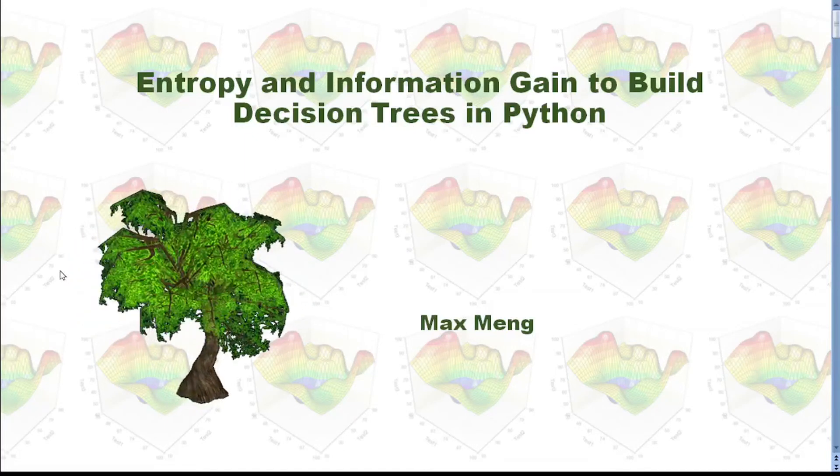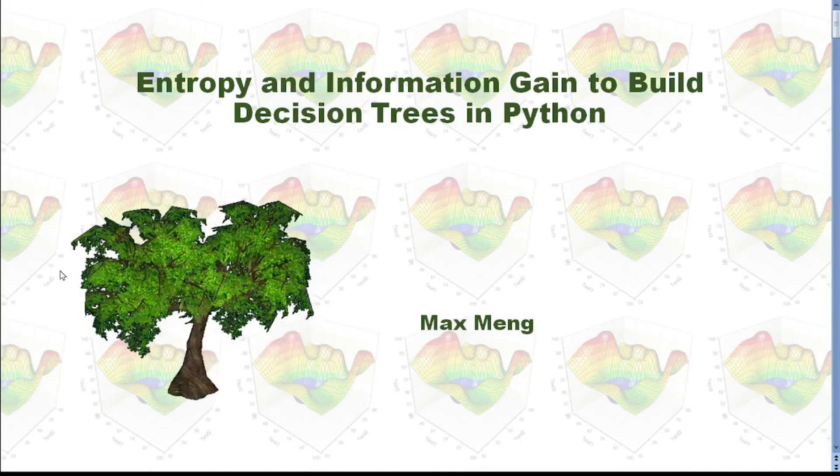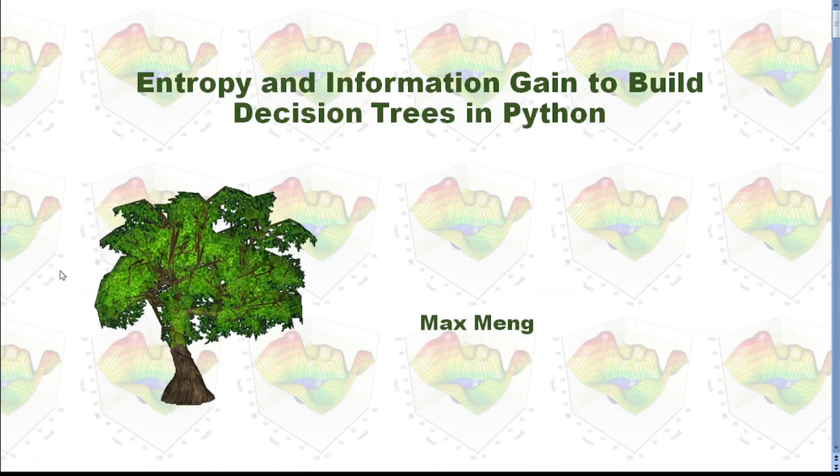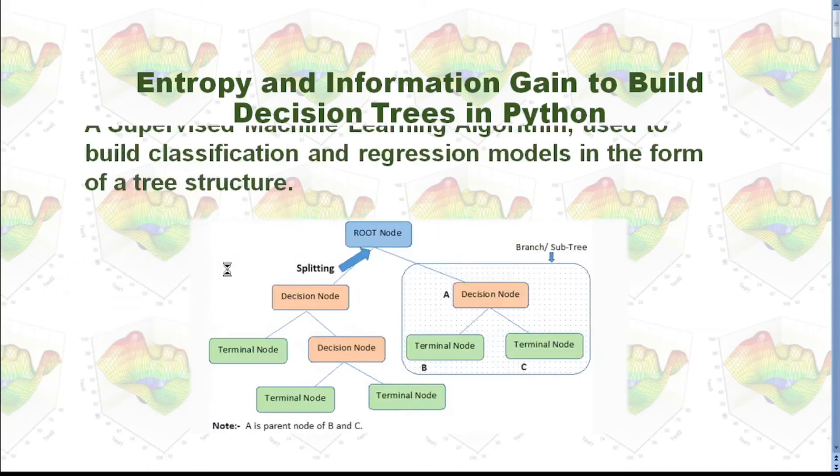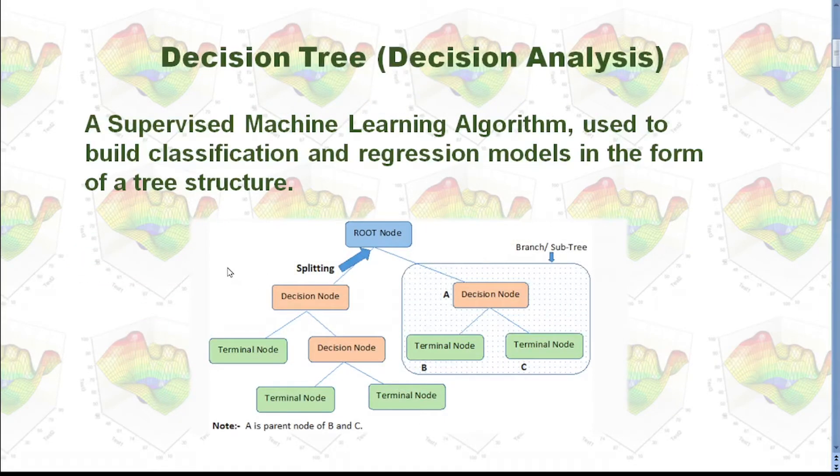This time, I'm going to talk about how to use entropy and information gain to build decision trees in Python. A decision tree is a supervised machine learning algorithm used to build classification and regression models in the form of a tree structure. Imagine we have a collection of data points. All those data points have many features. We need to classify all those data points based on those features.